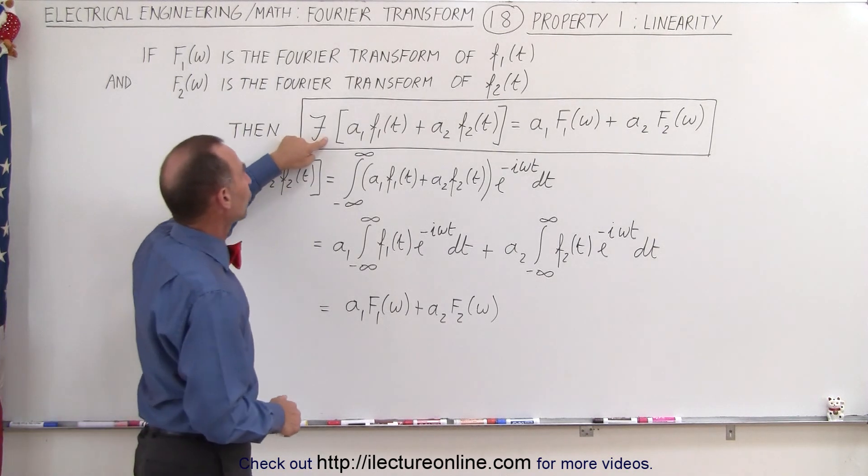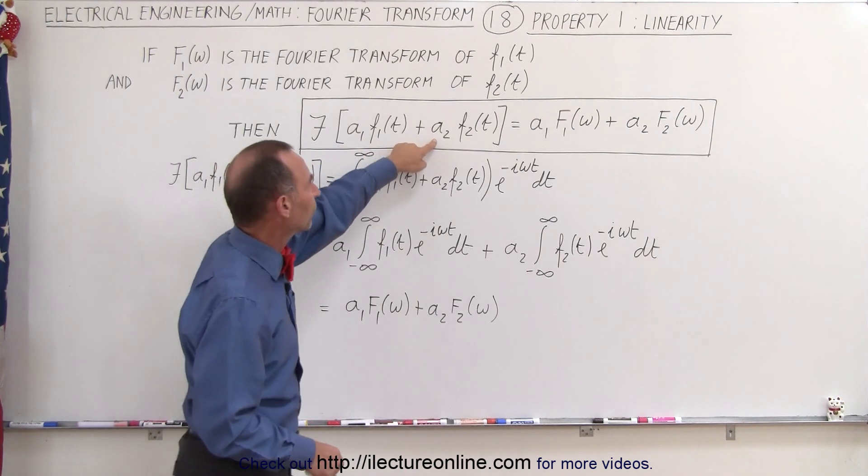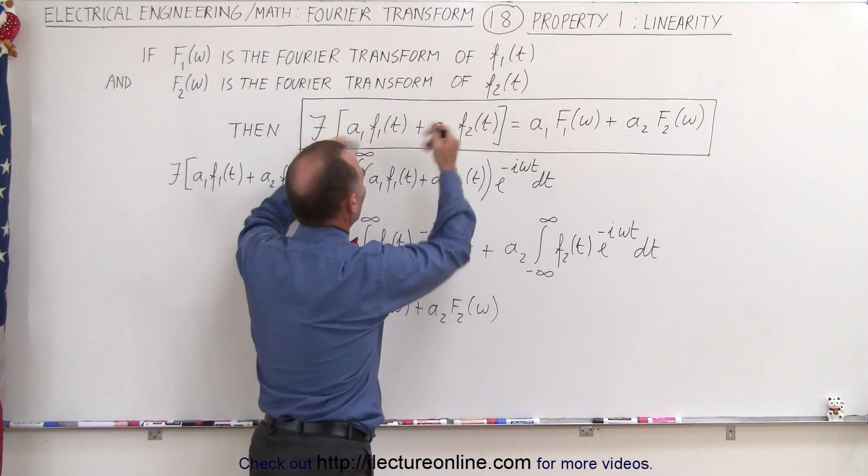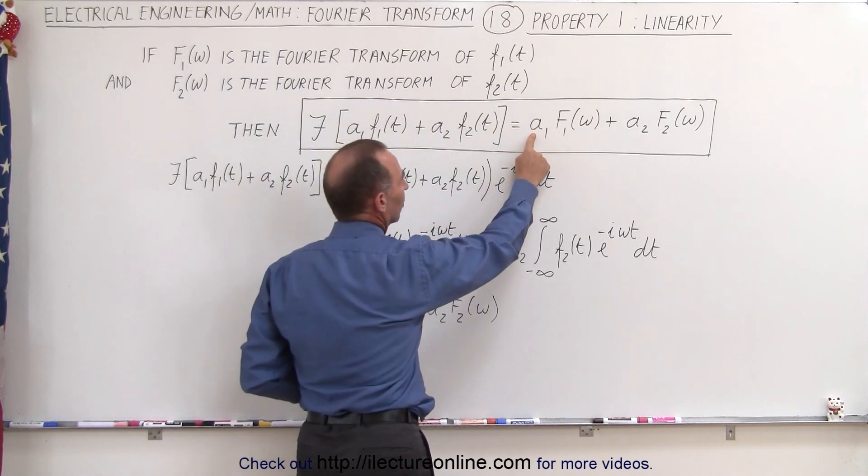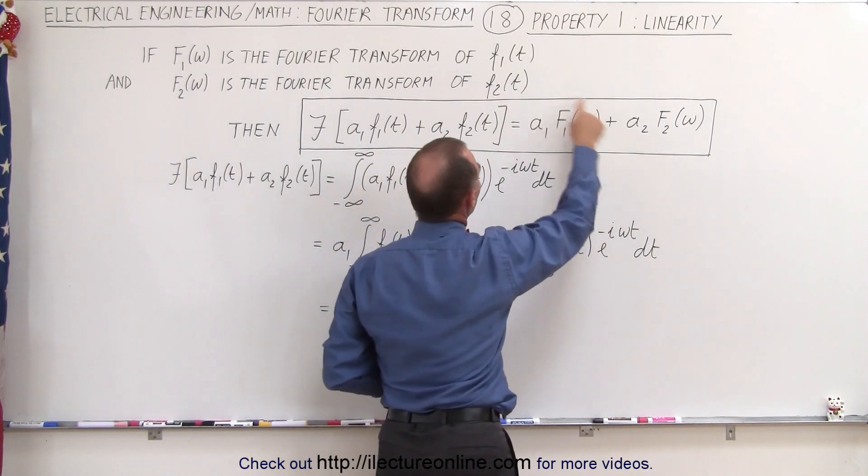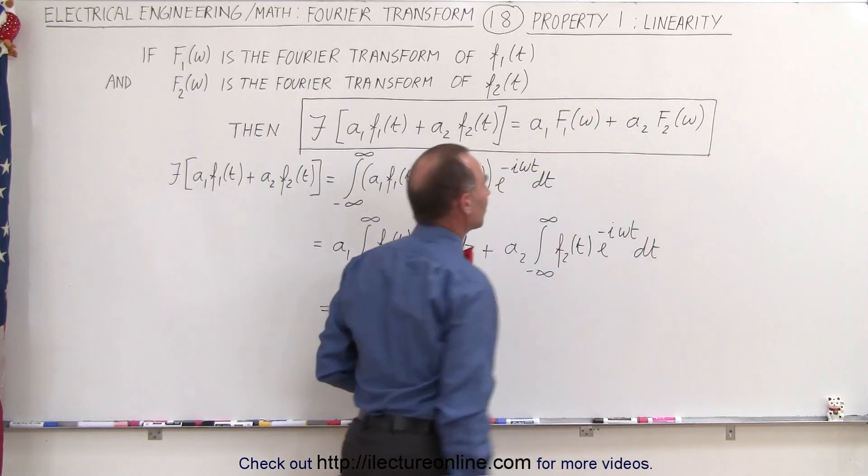that the Fourier transform of a constant multiplied by the first input function plus a different constant multiplied by the second input function, then that will be equal to that very same constant times the Fourier transform of the first input function plus that second constant times the Fourier transform of the second input function.